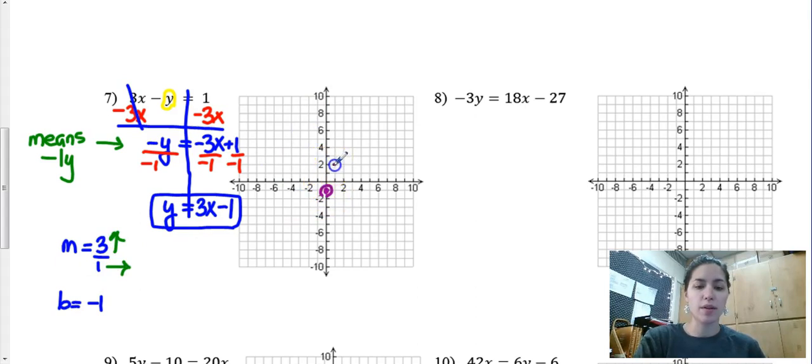Count up 1, 2, 3, right 1. 1, 2, 3, right 1. And I can plot my line.